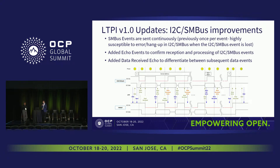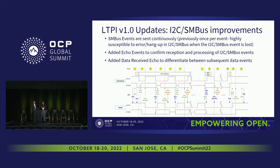Let me hand it over to Munir to cover the specifics of I2C and SMBus improvements. Thanks, Kasper. One of the things added in the spec is an improvement about how we handle I2C bus and SMBus events. Previously we were sending the SMBus event once per event, but now we're sending events continuously. What's added is eco-events to confirm the reception and processing of I2C events — so there's an event from HPM to SCM when data is sent, and an eco-event back to the HPM, and then back to SCM again, confirming that HPM understood the request and SCM also understood the request.